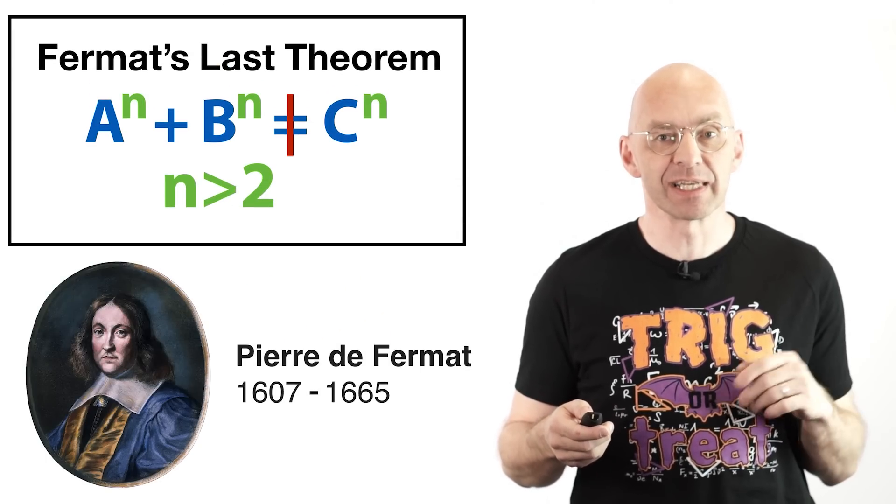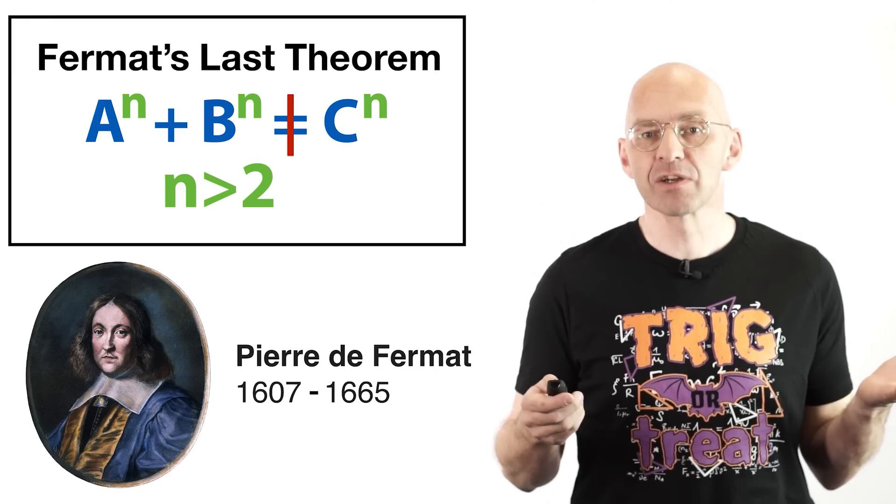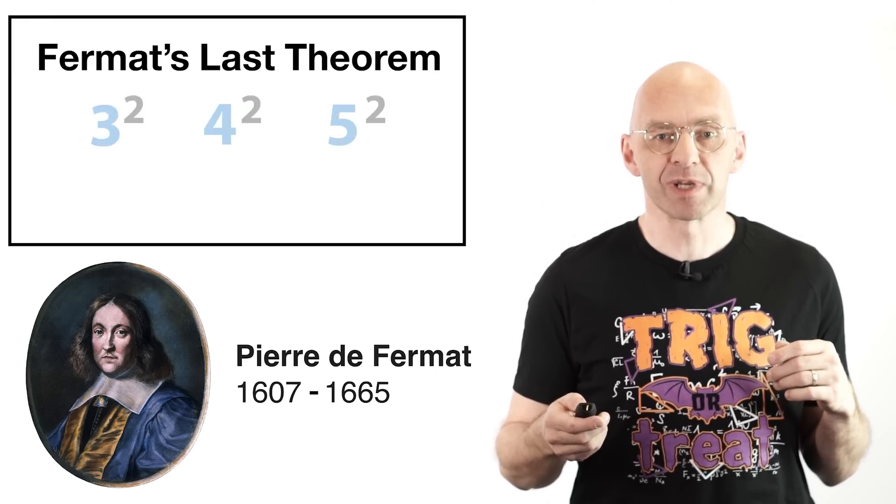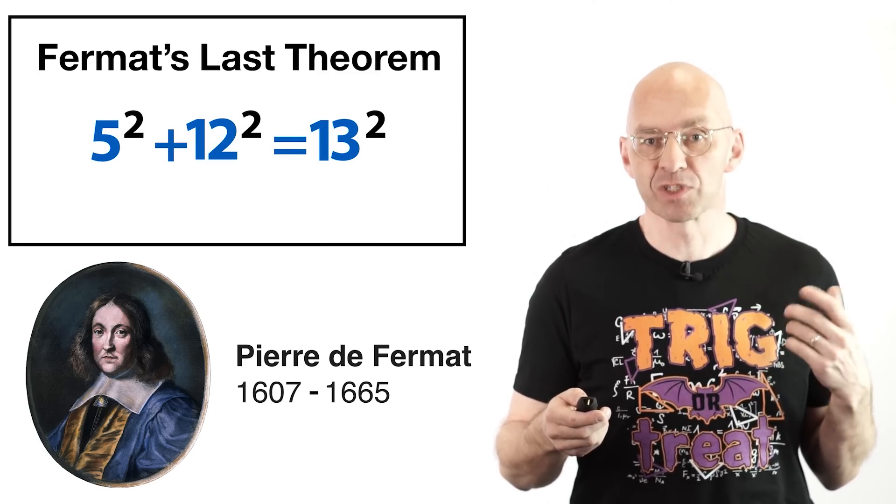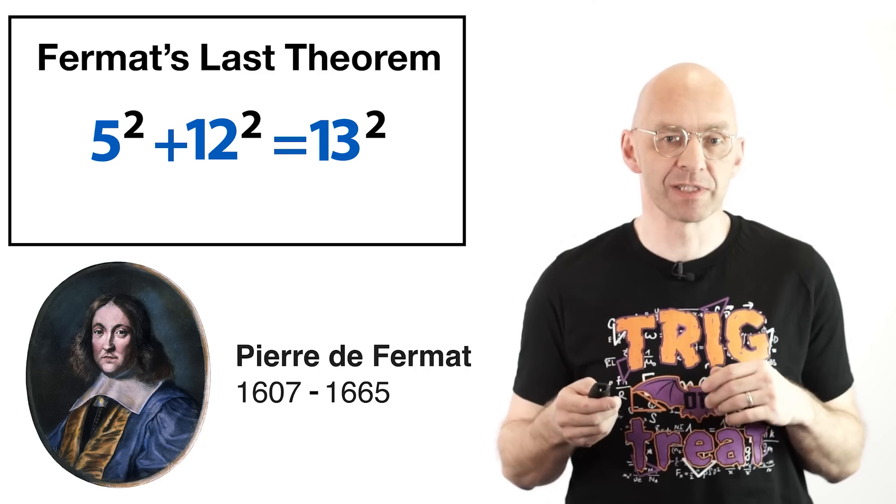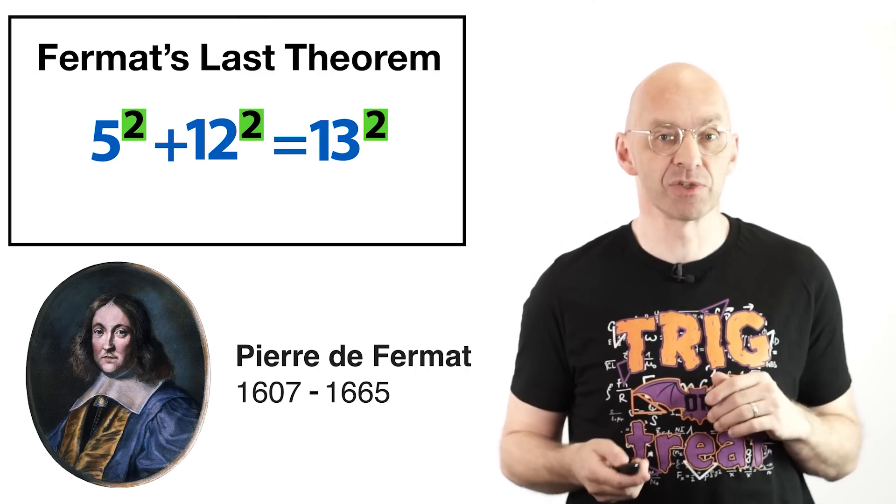Welcome to a special Halloween edition of Mathologer. Recently I did a video on Fermat's mega-famous last theorem. Fermat's theorem says that the pretty Pythagorean integer identities like 3 squared plus 4 squared equals 5 squared or 5 squared plus 12 squared equals 13 squared don't have non-triple counterparts if the exponent 2 is replaced by any integer greater than 2.